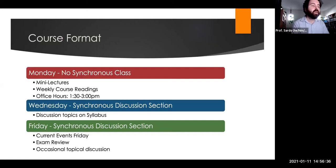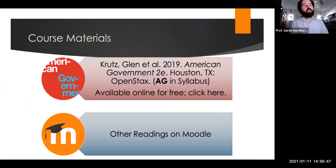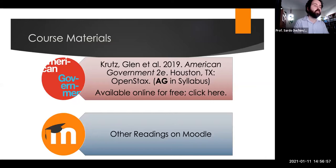When we're coming up to exams, we'll do exam review periods. Occasionally, depending on the schedule, we'll have more of a topical discussion. The course materials include an open-source textbook, American Government, second edition, available for free as a PDF or online. Every other reading is available on Moodle either as a PDF or linked to a library resource. You do not need to purchase any books.